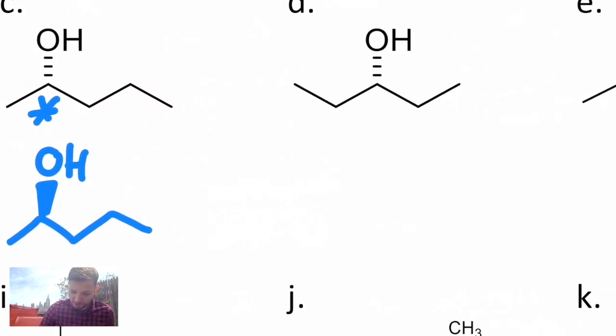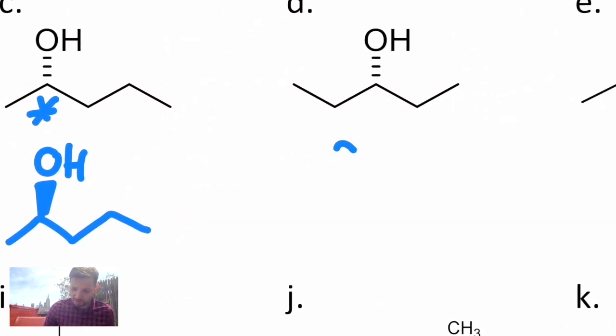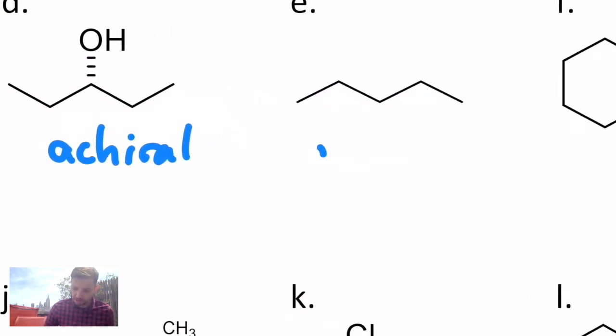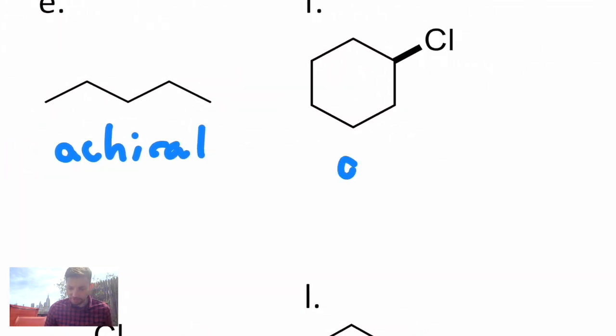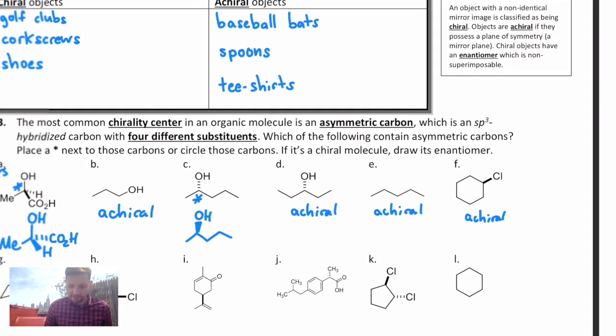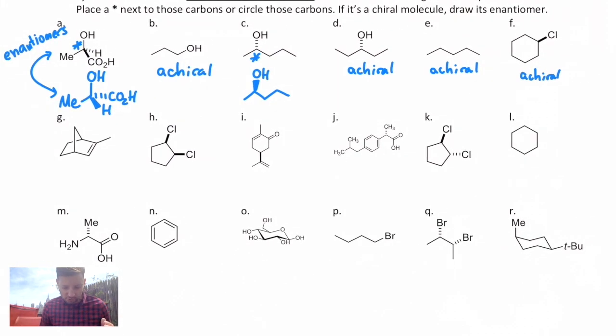D is achiral, there's no asymmetric carbons in molecule D. Likewise in E, there are no asymmetric carbons. And in F, there are no asymmetric carbons. Those are all achiral examples. So I want you to just hit pause and take a look at the remaining two rows and start with just seeing if you can identify, are there any asymmetric carbons in those molecules? We'll come back and check, and then we'll talk about which ones we can draw enantiomers for and which ones we can't. Try that now.